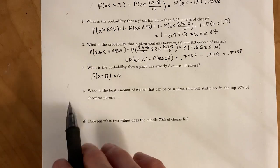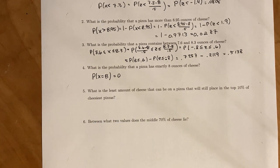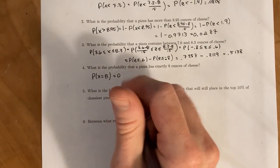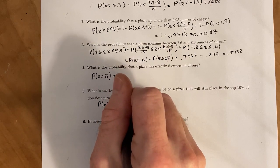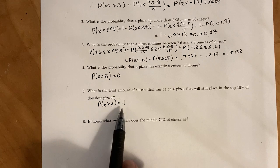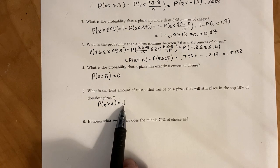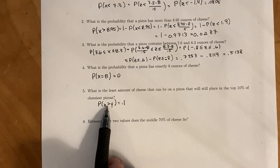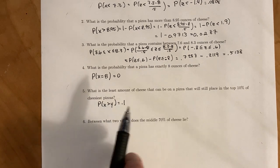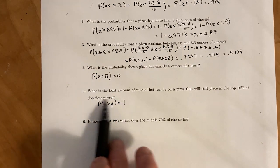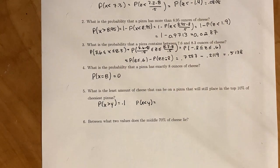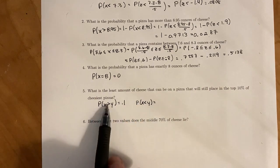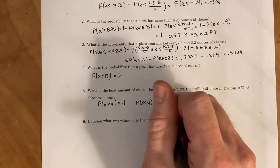This next part is saying, what is the least amount of cheese that can be on a pizza that will still place it in the top 10% of cheesiest pizzas? We're looking to find what value for y will give us this equation. Top 10% of cheesiest pizzas, since our z-score table tells us things to the left, only less than statements, we'll first have to convert this statement into a less than. So the probability that x is less than y has to equal, well, if these two probabilities have to add up to 1 and this is 0.1, that means this has to be 0.9.